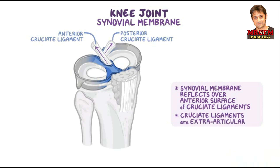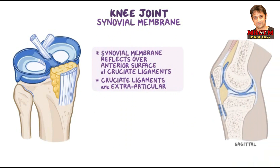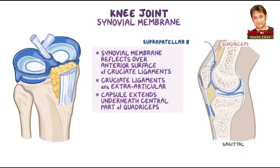In addition to the cruciate ligaments, the synovial membrane lines the posterior surface of the infrapatellar fat pad, making this extra-articular as well. The anterior synovial reflection creates a median infrapatellar synovial fold. Above the patella, the synovial membrane of the joint capsule extends underneath the central part of the quadriceps to continue with the synovial lining of the suprapatellar bursa.